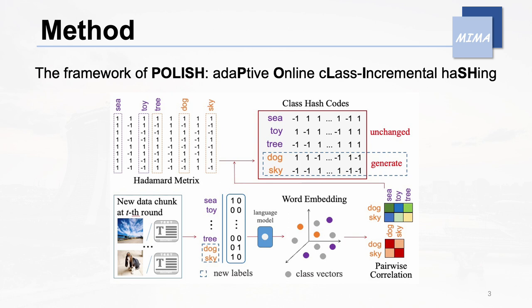It incorporates hash code characteristics into label embeddings using Hadamard matrices. Simultaneously, POLISH employs label embeddings as globally invariant information to guide the generation of high-quality hash codes for new data chunks. Additionally, POLISH introduces an efficient optimization algorithm for discrete learning of hash codes and label embeddings.